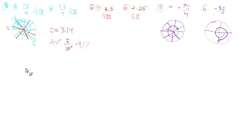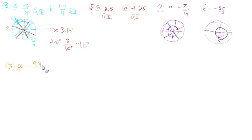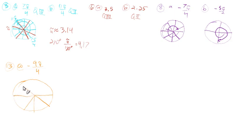Now let's jump to number 13. We have the vocabulary word coterminal. We want an angle that's coterminal with negative 9π over 4. First we should look at where negative 9π over 4 is. Counting clockwise: negative π over 4, negative 2π over 4, continuing to 3, 4, 5, 6, 7, 8, 9 — negative 9π over 4 is right there.